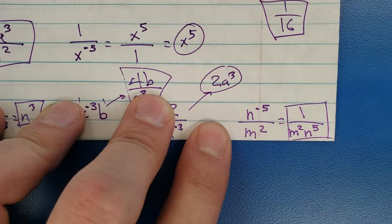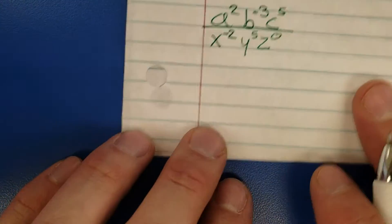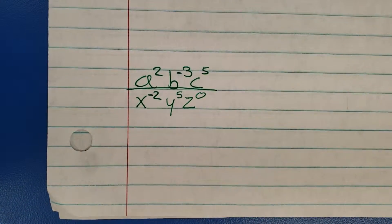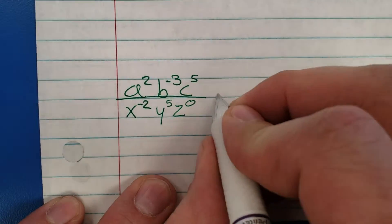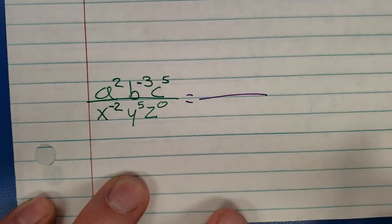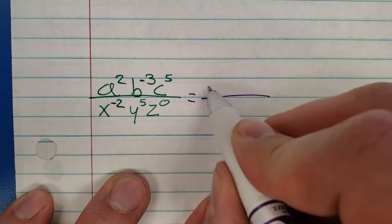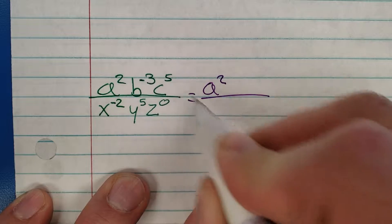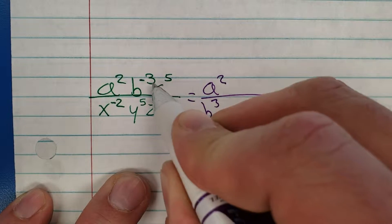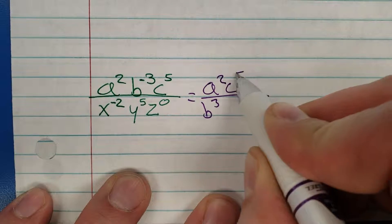You're gonna see problems like this in your practice quiz. So at first you're probably gonna panic. Oh no, don't panic, you'll be fine. Follow the rules. It's positive, it stays. You're staying. B cubed, you're moving down here. You're negative. C to the five, you're staying.